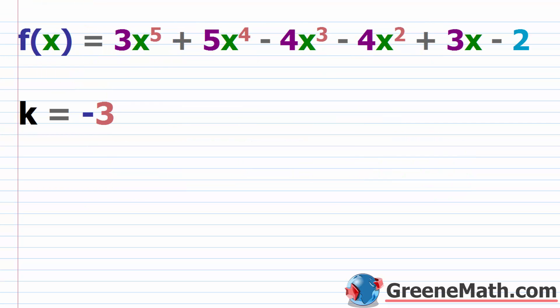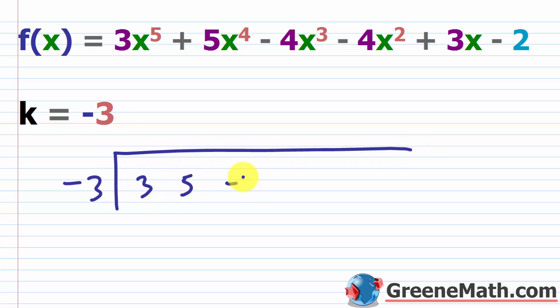Now for the lower bound rule: if your k is negative, and the numbers in the last row alternate in signs — positive, negative, or negative, positive — then k is a lower bound. Zero can be treated as either positive or negative, whatever you need. If this alternating pattern occurs, then k is a lower bound and none of the real zeros will be below that point.